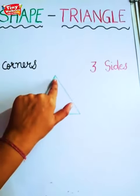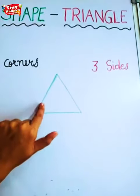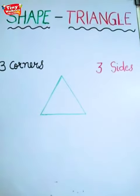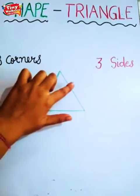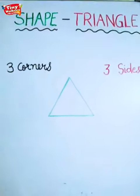One, two, and three. And triangle has three corners. Okay, children. One, two, and three. Right?